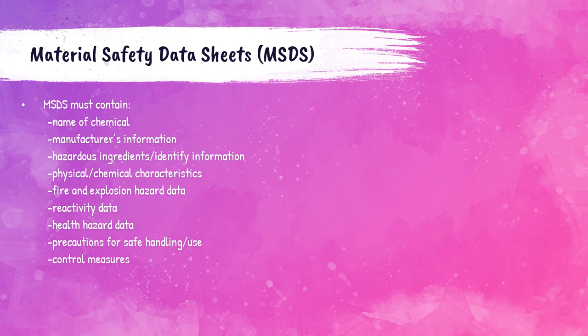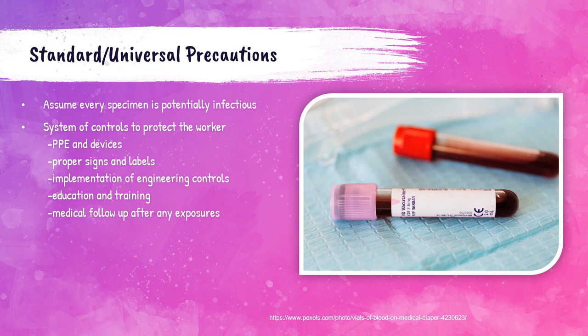Material Safety Data Sheets, or MSDS, are safety data sheets that list information relating to occupational safety and health for the use of various substances. The MSDS for each chemical must contain the name of the chemical and manufacturer information, hazardous ingredients, physical and chemical characteristics, data on fire, explosion, reactivity and health hazards, and control measures including precautions for safe handling and use.